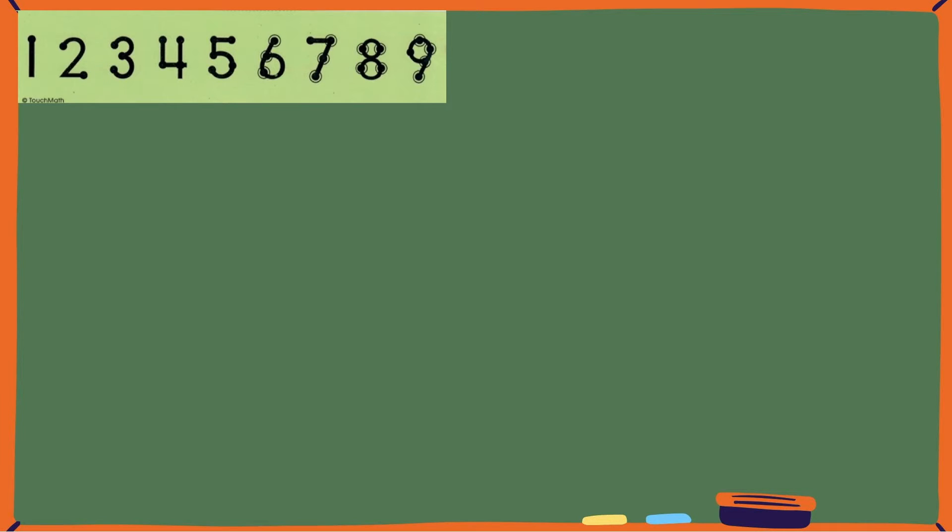Let's take a look at a subtraction problem. When subtracting 12 minus 3, we'll place 3 touch points on the number 3. We'll touch and say 12 and then count back with each touch point.